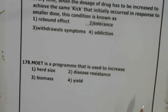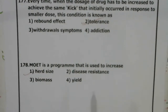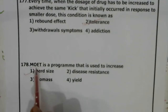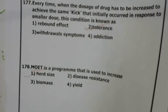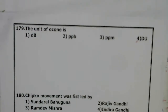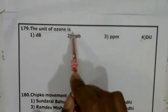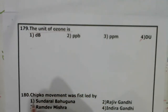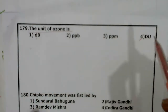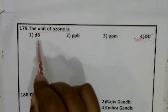Question 178: MOET is used to improve animals and increase yield and productivity. Question 179: The unit for ozone is the Dobson unit (DU), not the first option. DB means decibel, which is used for noise measurement. Parts per million is another unit. The correct unit for ozone is DU — Dobson unit.